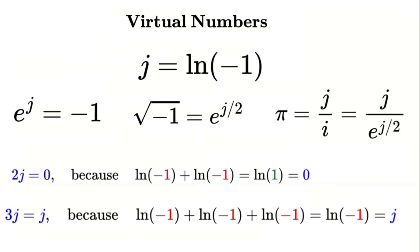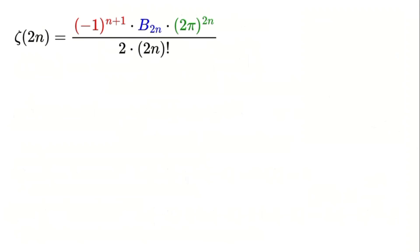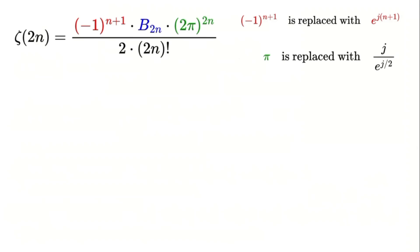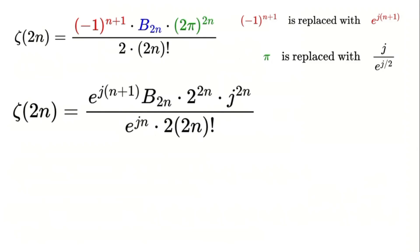Now let's use virtual numbers to reinterpret the Euler-Zeta formula. Here's the original formula again: Zeta of 2n equals negative 1 raised to the power of n plus 1, times the Bernoulli number b sub 2n, times 2pi raised to the power of 2n, all divided by 2 times 2n factorial. In the virtual number system, replace negative 1 raised to the power of n plus 1 with e to the power of j times n plus 1, because e to the power of j equals negative 1. Replace pi with j divided by e to the power of j divided by 2. Substituting these into the formula, we get zeta of 2n equals e to the power of j times n plus 1, times the Bernoulli number b sub 2n, times 2 raised to the power of 2n, times j raised to the power of 2n, all divided by 2 times 2n factorial.